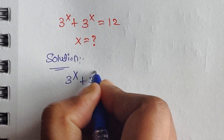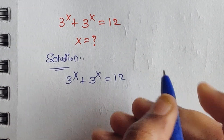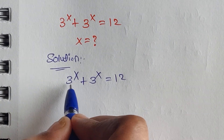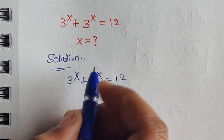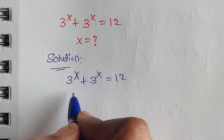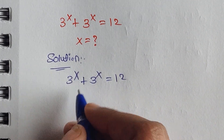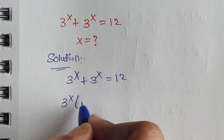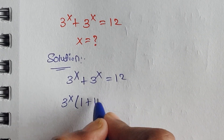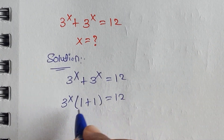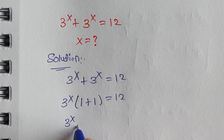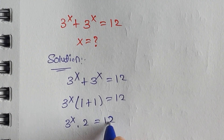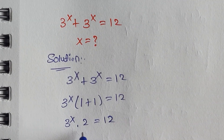So in this equation, we have a common factor: 3 to the power of x. We take out 3 to the power of x as common, and the leftover numbers inside the bracket are 1 plus 1. So we get 3 to the power of x times (1 plus 1), which is 3 to the power of x times 2, equal to 12.